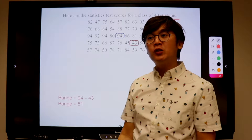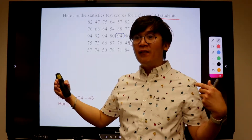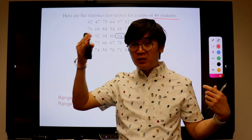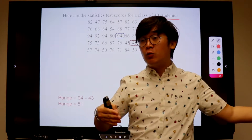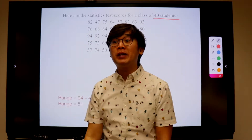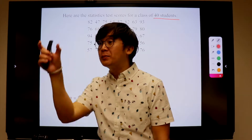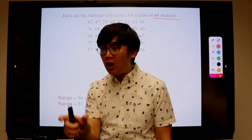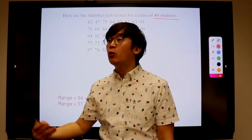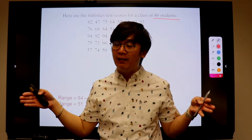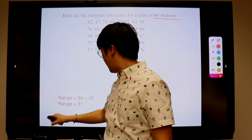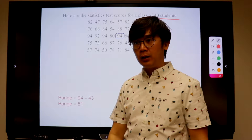So that means if we are going to create or construct our graph, 51 is too much — 51, 52, 53, all the way to 100. So in this particular case, we're going to be using classes, which means groups of numbers in our frequency, so that we can scale our graph and we don't need to write every single item in our data set.